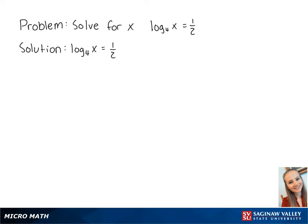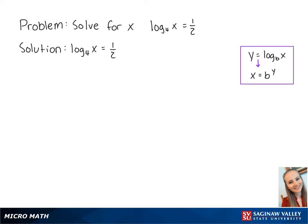For this problem, we want to solve for x in the equation log base 4 of x equals 1 half. Using the following property, in this equation, y is equal to 1 half and b is equal to 4. So we can rewrite this as x equals 4 to the 1 half power.